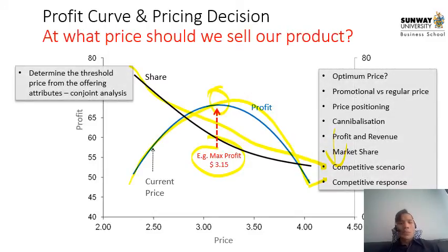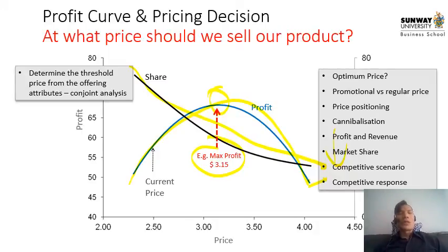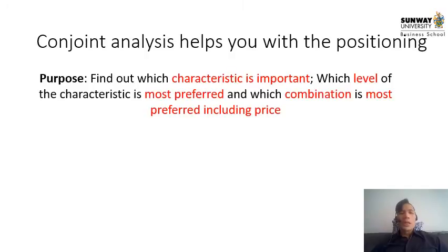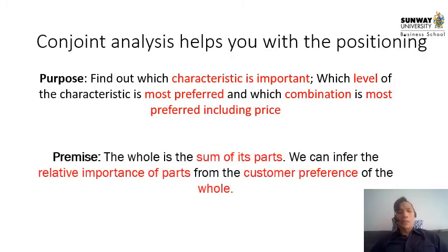What is the optimum price? You should ask yourself about promotional or regular pricing, selling, profit, revenue share, competitive scenario and ratios, and also determine the threshold price from the offering attributes. Conjoint analysis can give you a very good look into this. The purpose of conjoint analysis is to find out which characteristics are important, which level of the characteristics is most preferred, and which combination — including the price — is most preferred. The premise is that we can infer the relative importance of parts from customer preference on the whole.